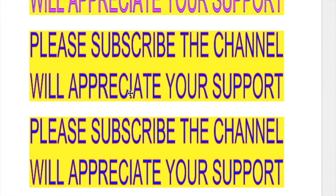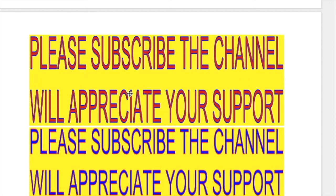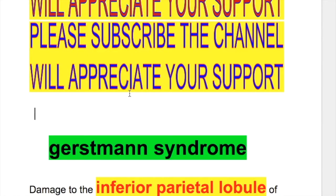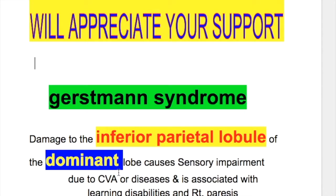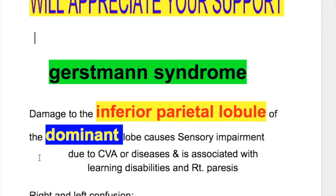In this video, we'll discuss Gershmann syndrome and some neurological terms with their meaning. Gershmann syndrome results from damage to the inferior parietal lobule of the dominant hemisphere, which differs from damage to the inferior parietal lobule of the non-dominant hemisphere. Gershmann syndrome causes learning disabilities in children due to sensory impairment, and in adults due to cerebrovascular accident or diseases, and is associated with paresis.